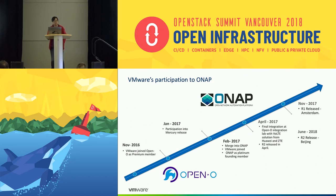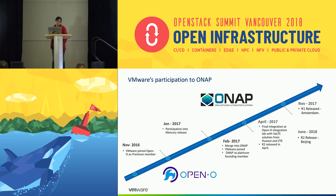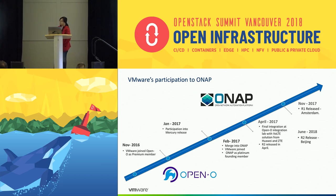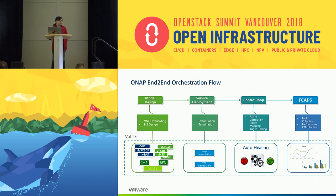We have a long history of contributing to this community since early 2016. In 2016 we joined OpenO as a platinum member and started working on the Mercury release, the secondary release of OpenO. In February 2017, the community merged into ONAP under the Linux Foundation, and VMware joined as a platinum funding member. In April we delivered the Mercury release, in November we published the Amsterdam release, and next month we will publish the Beijing release.